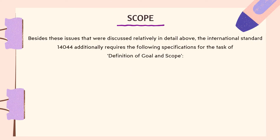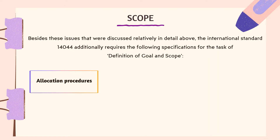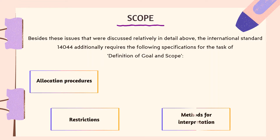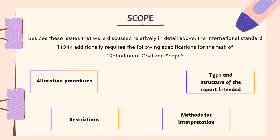Regarding scope: besides the issues discussed above, the international standard ISO 14044 additionally requires the following specifications for goal and scope definition: allocation procedures, restrictions, methods for interpretation, and the type and structure of the report intended.